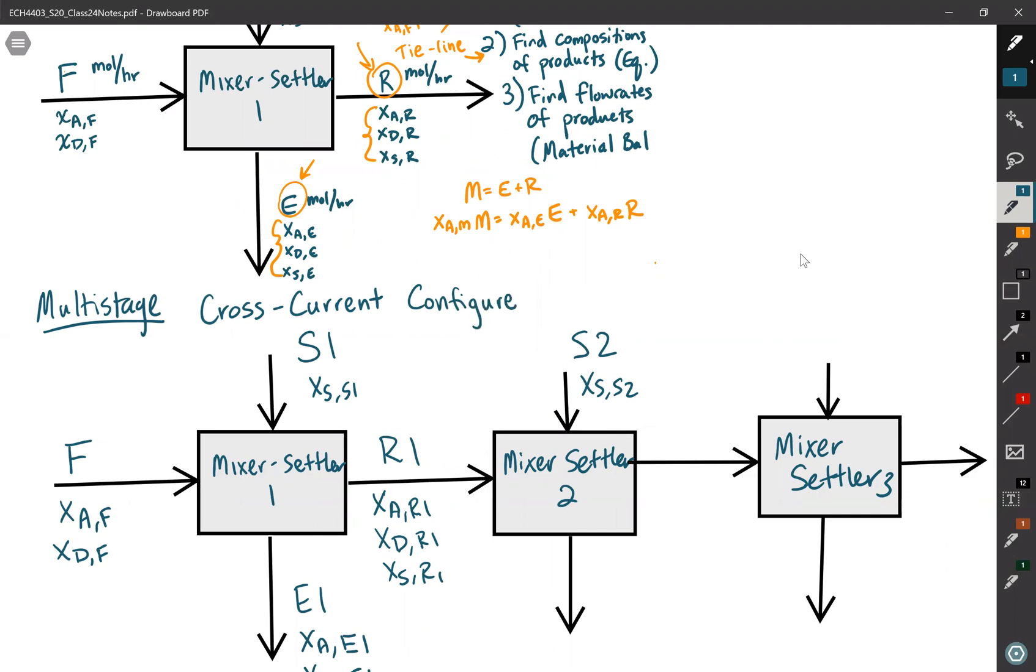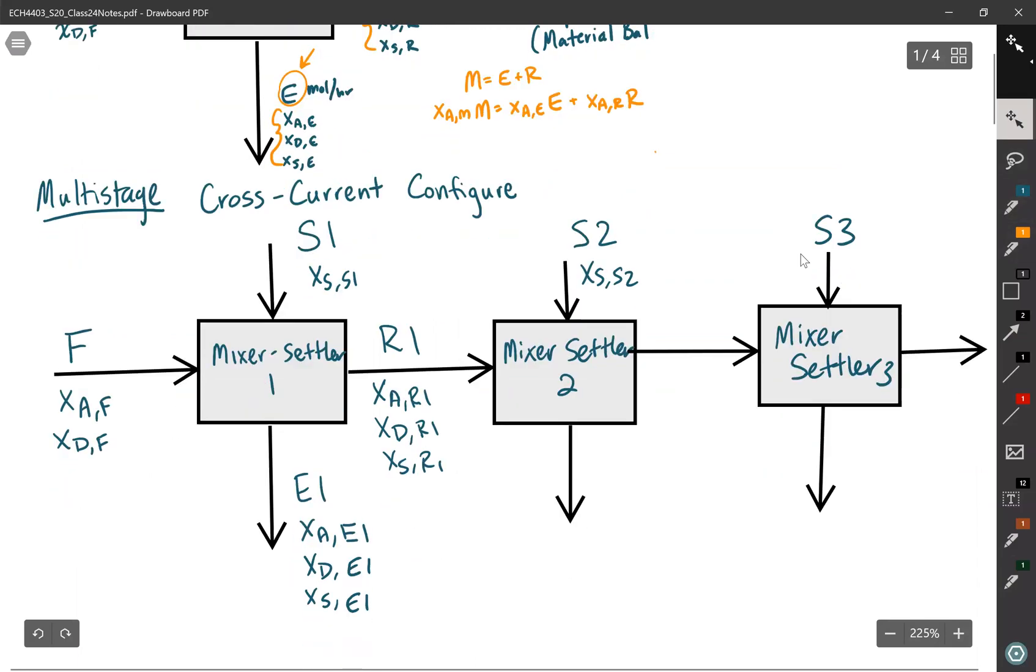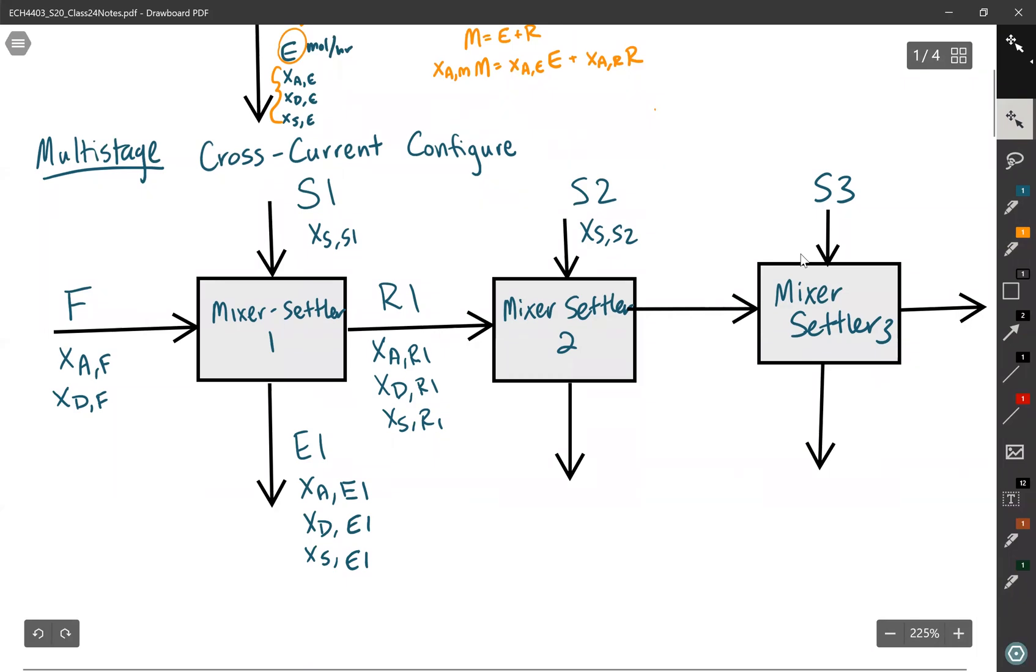In the cross-current configuration, I'm feeding fresh solvent to each stage. So S3 is here. Typically, the solvent is pure or nearly pure. So this is pretty efficient if you have access to a lot of pure solvent and you don't mind wasting some solvent. Depending on what you know, you can just use the algorithm and step through it algorithmically. In other words, if you knew what the feed was and what the flow rate of the solvent was, you could treat this first mixer settler as just a single equilibrium stage, which will enable you to find the flow rate of the raffinate and all three mole balances of the compositions. Also, you'd find the flow rate of the extract and all three mole compositions of the extracts.